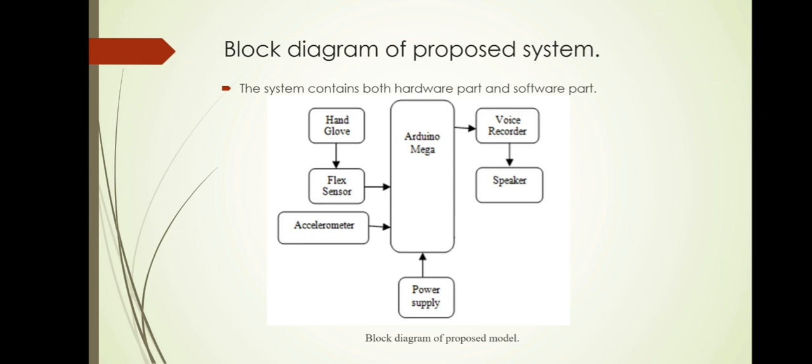Now I am going to explain the block diagram of our proposed system. The system contains both hardware part and software part. Whereas hardware part includes control systems, flex sensor with hand glove, Arduino Mega 2560, 3-Axis accelerometer, APR333 A3 voice playback module, transmitter receiver with electronic switches, and power supply. Software part includes programming of Arduino.